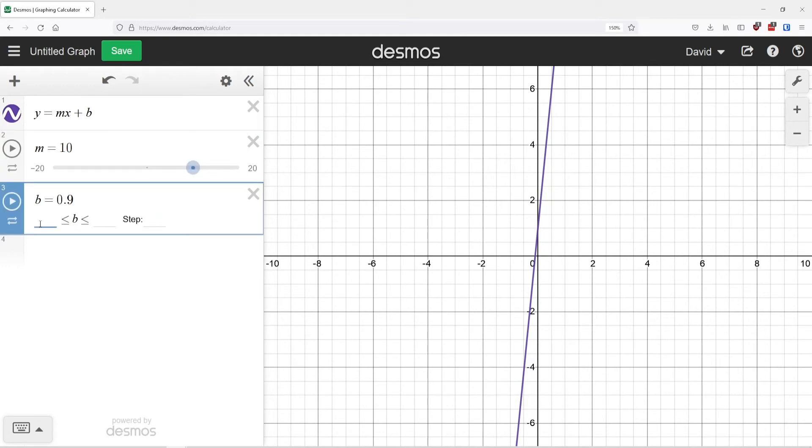And then I can do the same thing with the b value. Maybe I want this to go from negative 20 to positive 20, but I want this one to count by ones. So now you can see that my slider range changed. And now if I drag this, it's actually changing by 0.25s. And my b value is negative 20 to 20 and it's changing by single units instead.